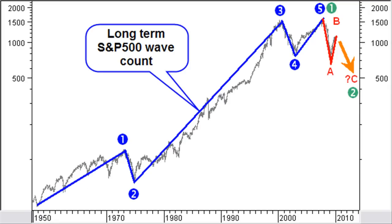Looking at the long-term Elliott count for the Standard & Poor's 500 index with a logarithmic monthly chart, we are in December 2009, most probably close to the end of a long-term correction wave B and starting a long-term correction wave C.